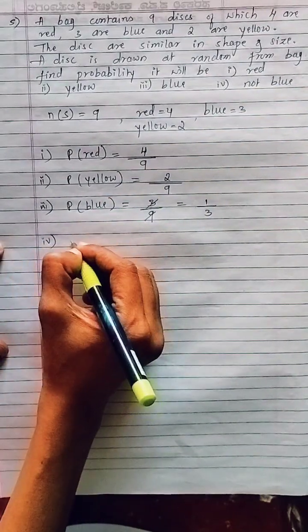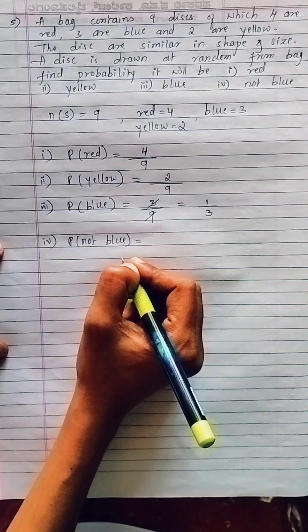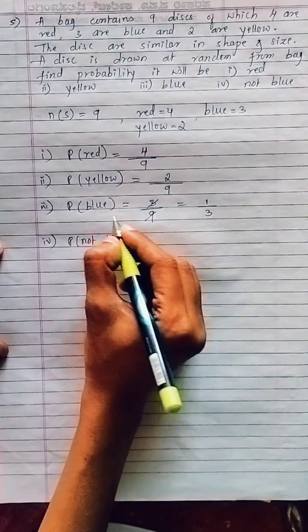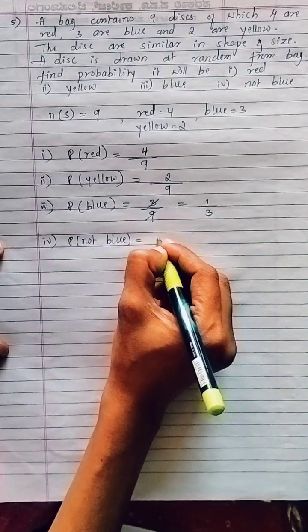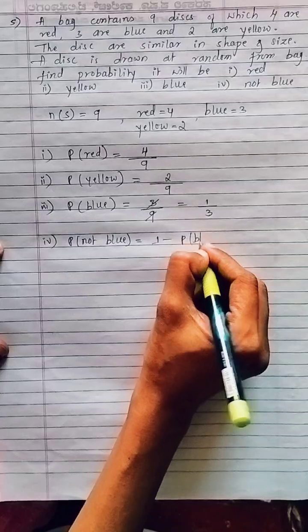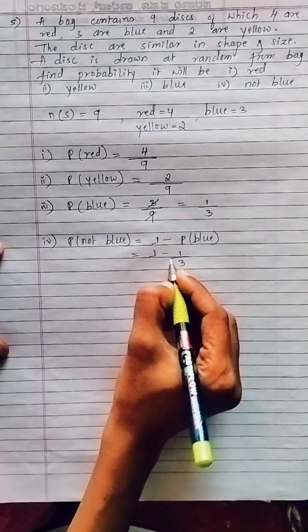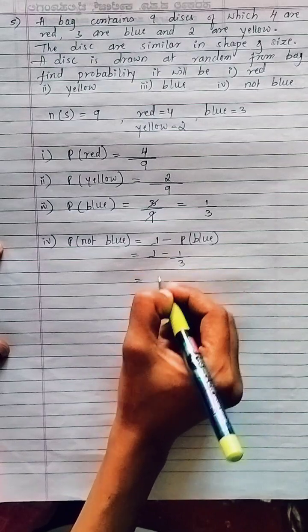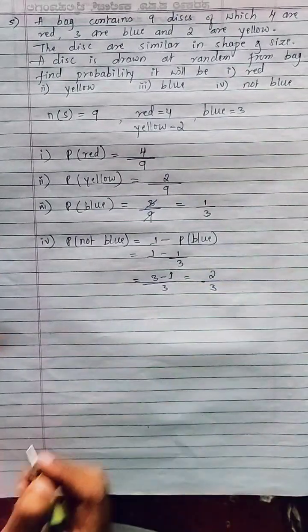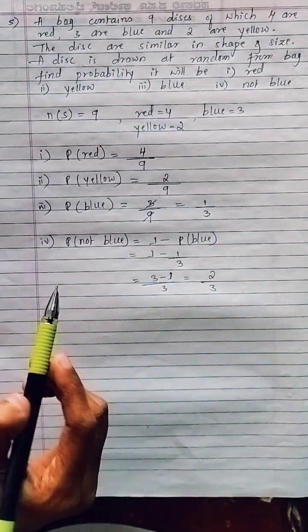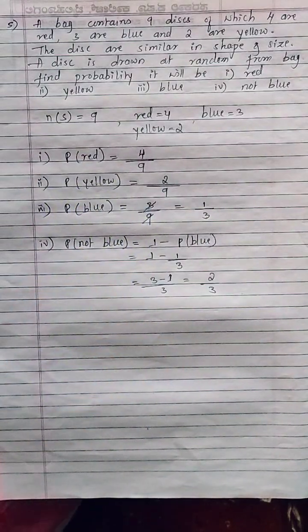For P(not blue): we know P(blue) = 1/3. So P(not blue) = 1 − P(blue) = 1 − 1/3 = (3−1)/3 = 2/3. Summary of answers: P(red) = 4/9, P(yellow) = 2/9, P(blue) = 1/3, P(not blue) = 2/3. Thank you for watching.